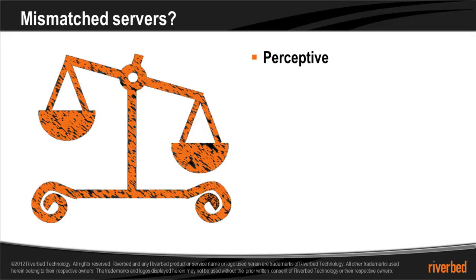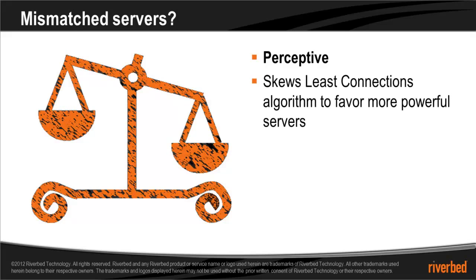If you have mismatched servers, where some servers are more powerful than others, the best algorithm to pick is perceptive. Perceptive skews the least connections algorithm to favor more powerful servers. It does this by factoring in response time — the more powerful servers will tend to respond quicker, giving them a faster response time, and leading the perceptive algorithm to skew the connections in their favor.